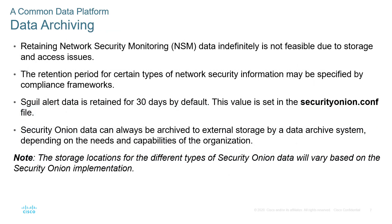Data archiving is also available. Archiving deals with our retention policy. It's unrealistic to retain all data indefinitely due to storage and access issues. Realistically, there is a retention period for the type of data collected. Squil, for example, will retain data for about 30 days by default, and this can be modified by going to the security onion.conf file. Security Onion can always be archived to an external source or storage if necessary. The storage location of different types of Security Onion data will be based on the Security Onion implementation or installation.